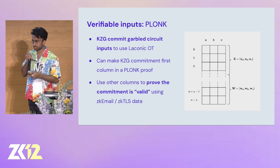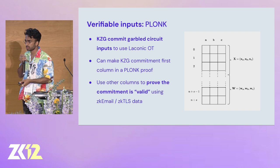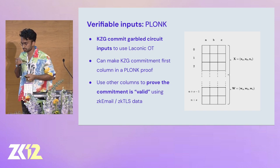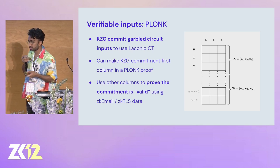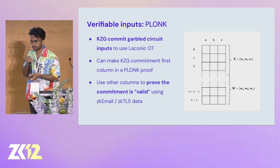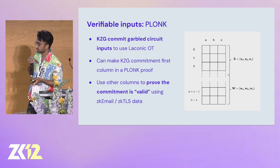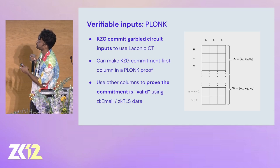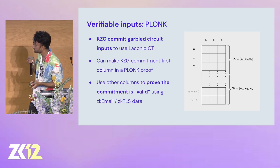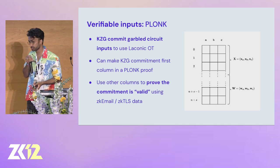Finally, Plonk comes in because this KZG commitment — you can attach a succinct proof of validity. In the settings we're operating in, this KZG commitment corresponds to the various parties' inputs into a garbled circuit. By default there's no verifiability on this — you're trusting the parties to put in the right data. But you can, for very cheap, attach a Plonk proof where your KZG commitment at a high level is the first column, and you can attach other data like ZK email and ZK TLS data to prove that your commitment is valid. This is all very efficient and very succinct.